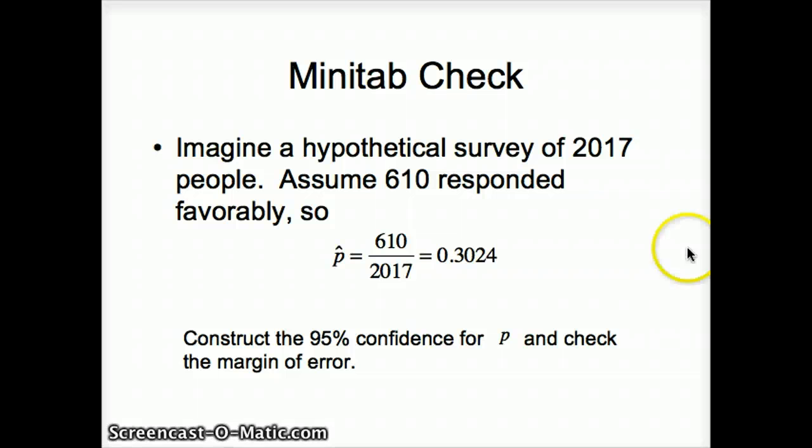So let's check that. We're using 2017 in our sample size. We want something in the neighborhood of 0.3, so I chose 610 out of 2017. Using this, we want to see what the margin of error is if we construct a 95% confidence interval. So we're going to go ahead and do that. We're going to find that confidence interval and use Minitab to see what that margin of error will be.